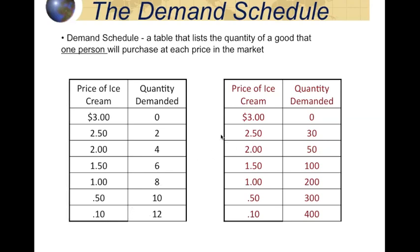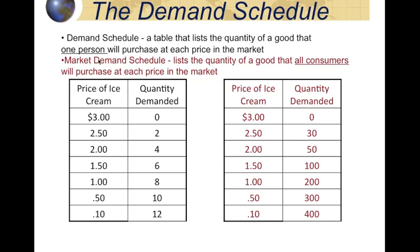Now, if we want to accumulate all of the different people in a particular area — let's say all the people in Homer Simpson's neighborhood, or all the people in Glynn County, or all the people in the United States — then we're talking about what's called a market demand schedule. We're talking about the consumption of all consumers in that area. Notice the numbers are bigger here because of that reason. So we've talked about the demand schedule and the market demand schedule.